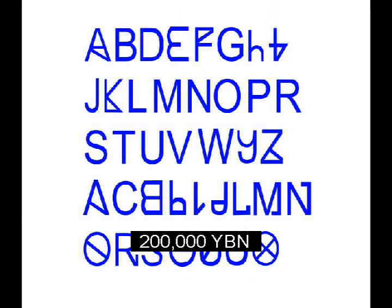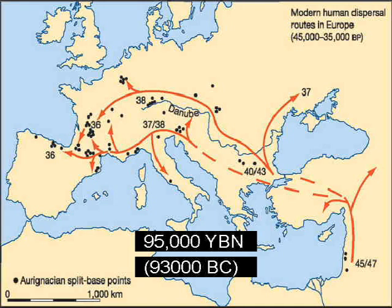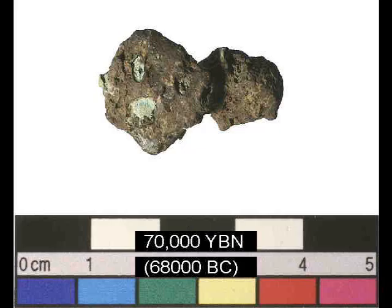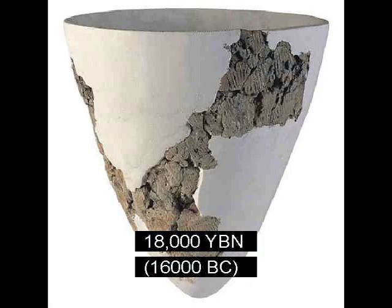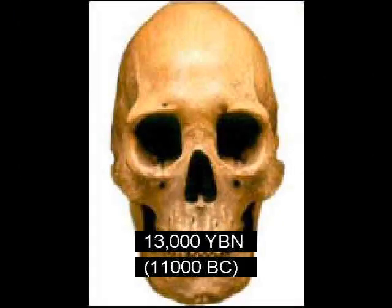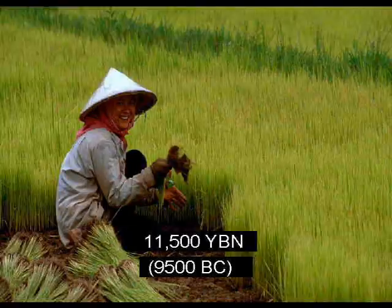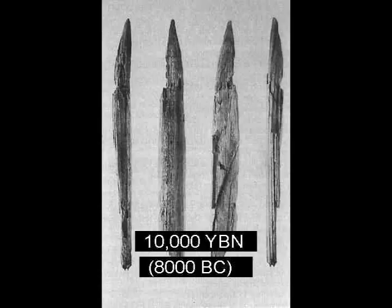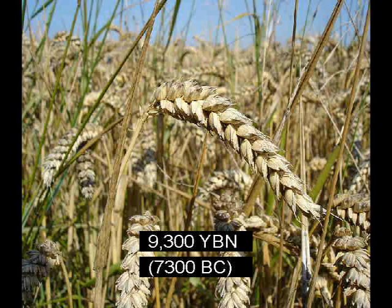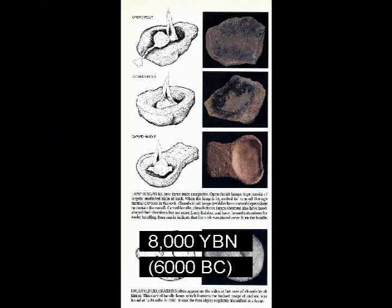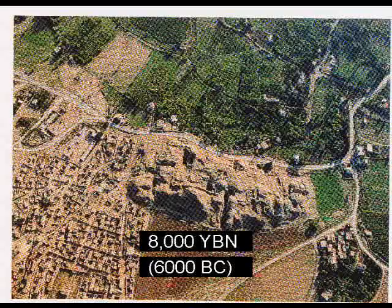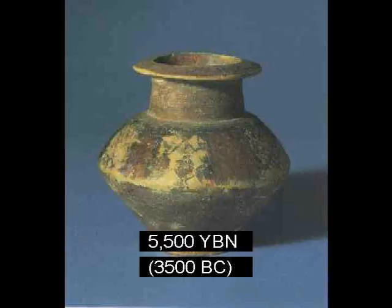The 30 sounds of human language. Sapiens move into Eurasia. Metal casting — copper. Weaving. Humans raise dogs. Pottery. Humans enter America. Rice grown. Bow and arrows. Wheat grown. Squash grown. Oil lamp. First city. The wheel.